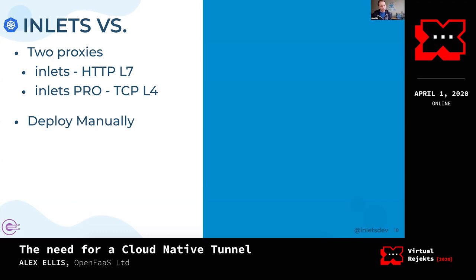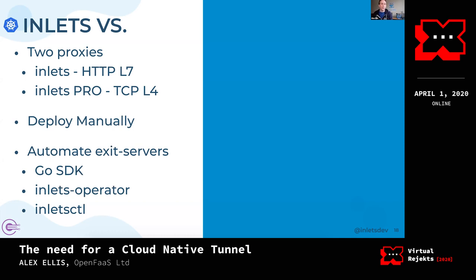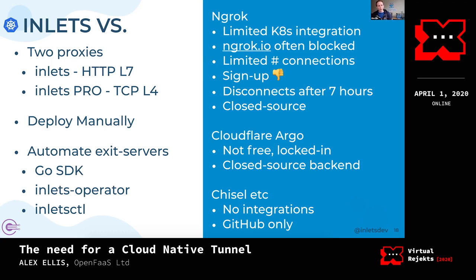Both editions can be deployed manually — just run the server at one end and the client at the other — or you can automate it. There's a Go SDK that can create VMs on almost any cloud, an inlets operator that watches for a LoadBalancer service and gets it an IP, and inletctl which we just saw.